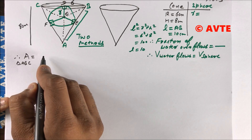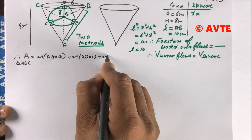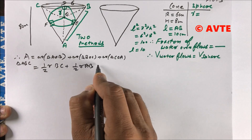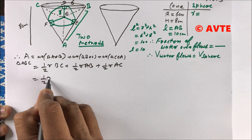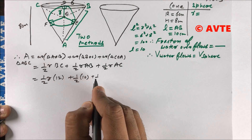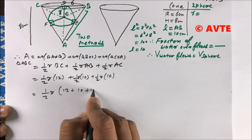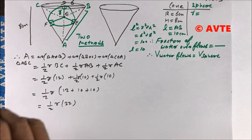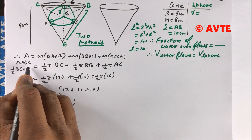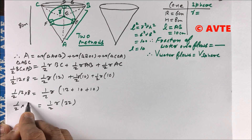Area of big triangle ABC equals area of triangle AOB plus area of triangle BOC plus area of triangle AOC. That is: half × R × BC + half × R × AB + half × R × AC, which equals half × R × (12 + 10 + 10), so half × R × 32. The area of the triangle is also half × base × height = half × 12 × 8.